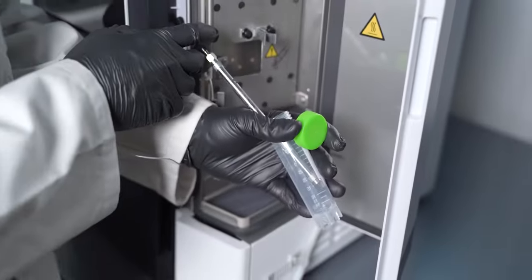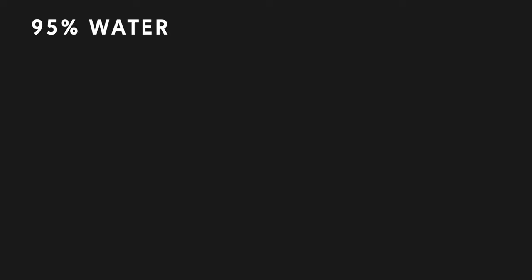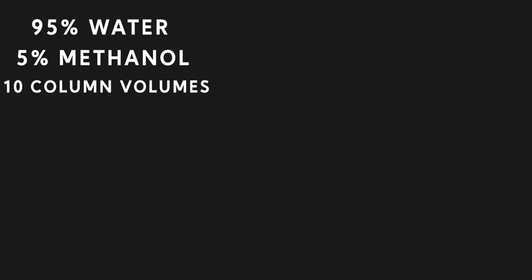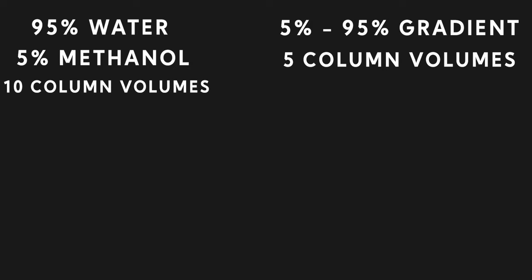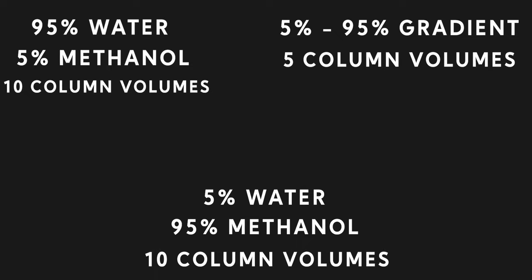The method for reverse flush would be to start with 95% water and 5% methanol for about 10 column volumes. Then you do a gradient of 5% to 95% methanol for 5 column volumes. And lastly you hold 5% water and 95% methanol for 10 column volumes. You want to run this at half of your normal flow rates for your method.